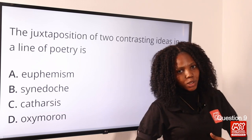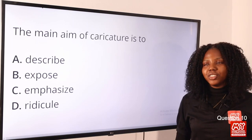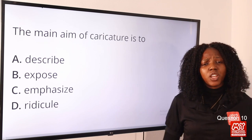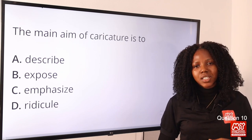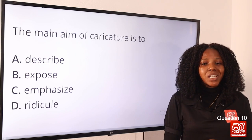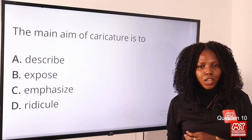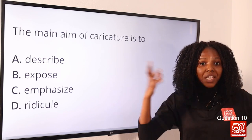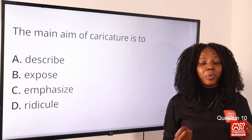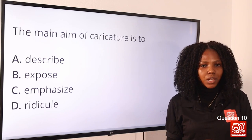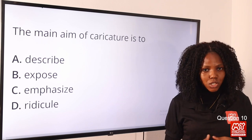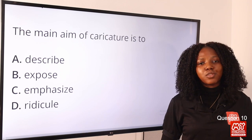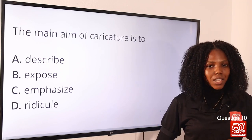Question 10: The main aim of caricature is to — when we think of caricature, we think of cartoons that exaggerate a person's characteristics, such as making a big ear even bigger, to create a comic effect. It is ridiculous in nature. The main aim of caricature is to ridicule — to mock. Option D is the correct answer.